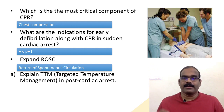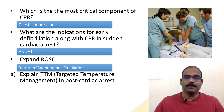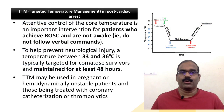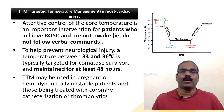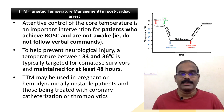ROSC stands for Return of Spontaneous Circulation. The ROSC algorithm is very important and may be asked during CPR viva stations or case discussions. An important point to stress is targeted temperature management (TTM) post cardiac arrest. Attentive control of core temperature is an important intervention for patients who achieve ROSC and are not awake — that is, they do not follow verbal commands. A temperature between 33 and 36 degrees Celsius is typically targeted for comatose survivors and maintained for at least 24 to 48 hours before neuroprognostication.